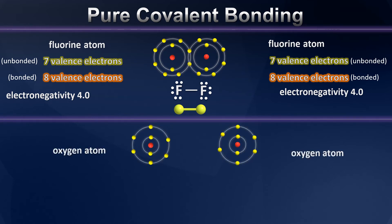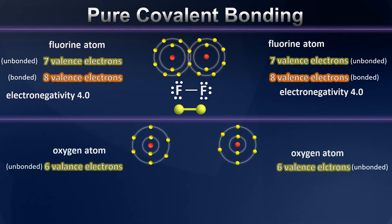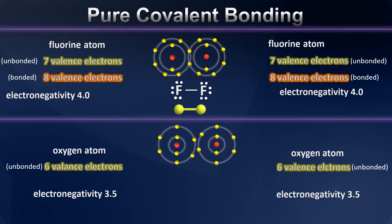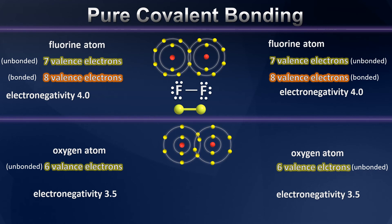Let's try one more — how about oxygen? Here we have two oxygen atoms, each of which have six valence electrons this time. But again, they have very similar electronegativities, and so they're not likely to exchange electrons in an attempt to achieve octets. Instead, if they move closer together, they can share some of their electrons, fooling one another into thinking that they actually have eight valence electrons in their shell.